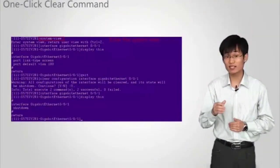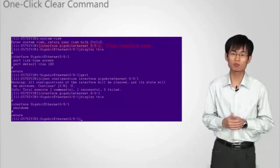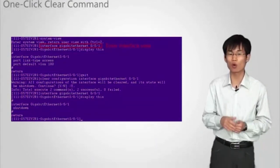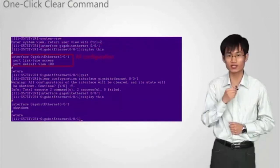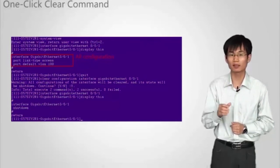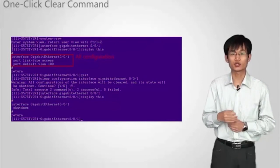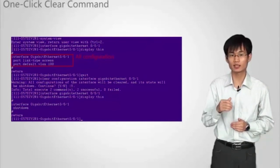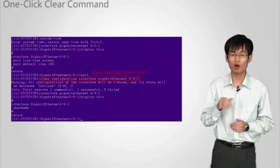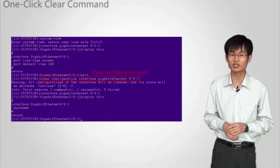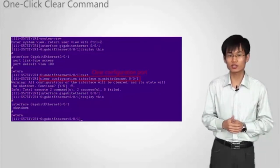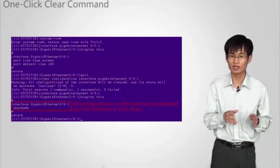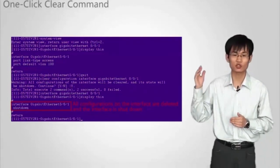If you want to use an interface on the switch for another service, you must delete the existing configurations one by one. If multiple configurations exist on this interface, you have to spend a lot of time deleting configurations. To reduce the maintenance workload and operation complexity, you can run the clear configuration interface command to delete all configurations on the interface. After this command is executed, all configurations on the interface are deleted and the interface is shut down.